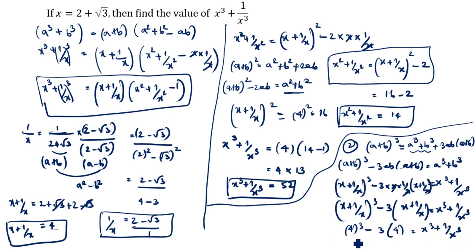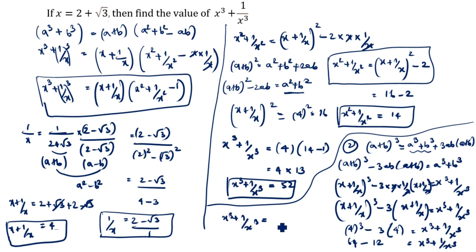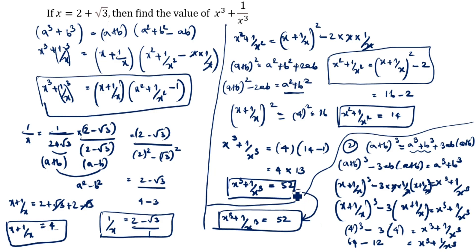What is 4 cube? 4 into 4 into 4: 4 fours are 16, 16 fours are 64. So 64 minus 3 times 4, which is 12, equals x cube plus 1 by x cube. Therefore x cube plus 1 by x cube equals 64 minus 12, which is 52. The first and second method give the same answer of 52, just using different methods.